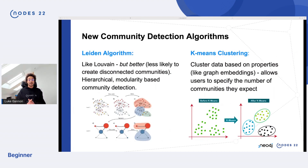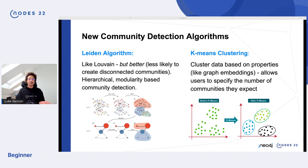We also added community detection algorithms like Leiden and K-Means. Leiden is like Louvain but better because it's less likely to create disconnected communities — you get hierarchical modularity-based community detection. Many folks were asking for K-Means clustering directly inside Neo4j, so we added it. It allows you to cluster data based on properties like graph embeddings, and you can specify the number of communities you'd like.